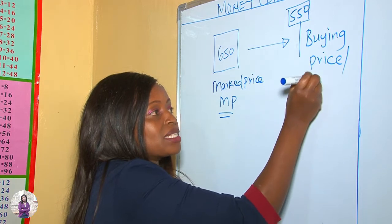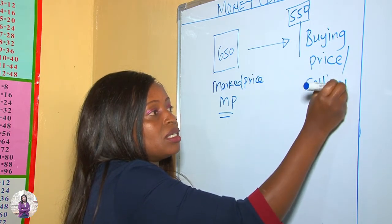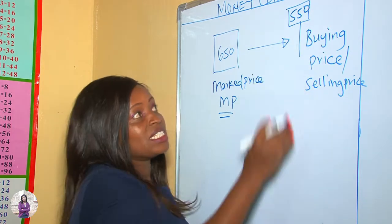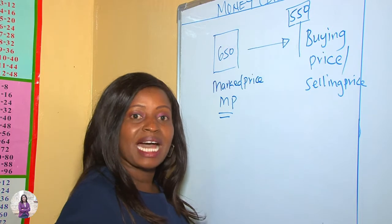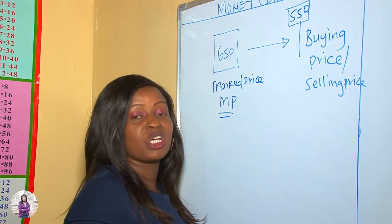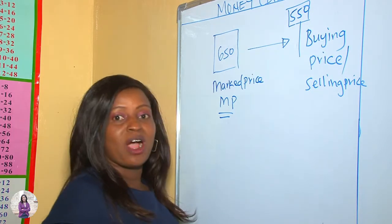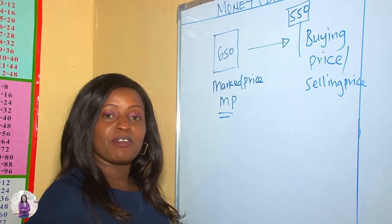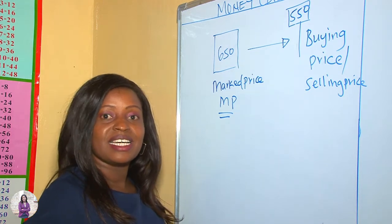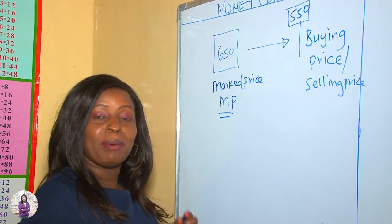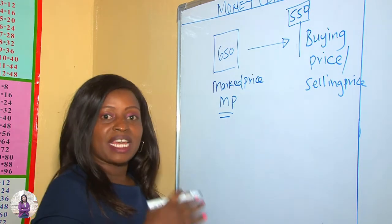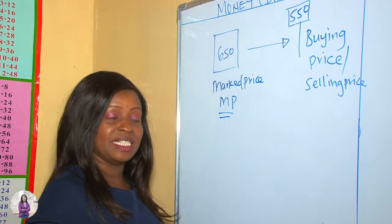The tag price can also be called the selling price, because it is the price at which customers are going to buy, and at the same time it is the price at which the seller sells the commodity. When you find such a tag, you feel excited knowing you can purchase items because the price has been reduced. This reduction in price is what we call discount.